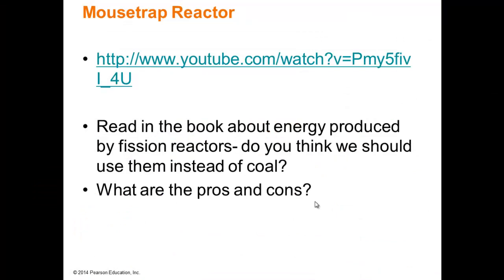Think about how much energy is produced by a fission reactor and consider whether we should use it instead of coal. The obvious pro is that so much energy is produced per uranium atom. However, there's a critical mass threshold — if you put too large a chunk of uranium together, the reaction becomes unstoppable, which is what could happen in a meltdown. Consider the cons: radioactive waste and meltdowns. Think about what you would recommend if you were in charge of U.S. energy policy. There's no single right answer, but there are definite pros and definite cons.